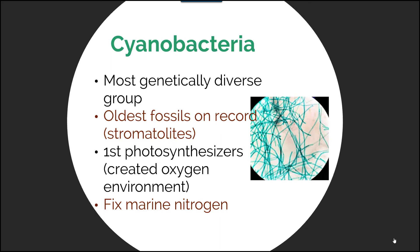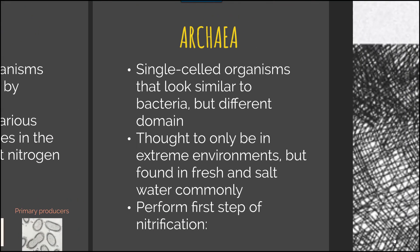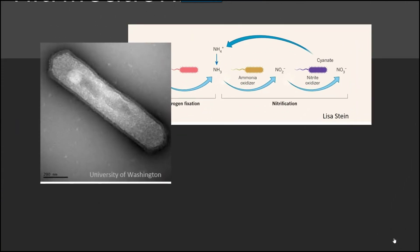Cyanobacteria is the most genetically diverse group and has the oldest fossils we have on record, through stromatolites. These are primary photosynthesizers — they create oxygen in the environment and also fix marine nitrogen, making them incredibly important organisms. Archaea are a largely ancient group of single-celled organisms that look similar to bacteria but belong to a different domain with some different characteristics. Originally thought only to be in extreme environments, they are actually found commonly in fresh and salt water, and they perform the first step of nitrification.